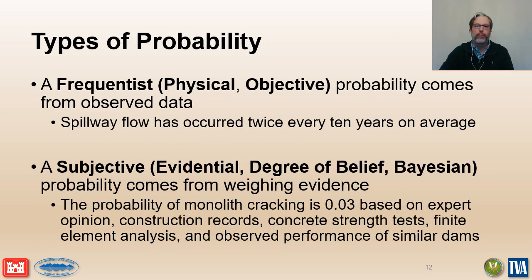There are two interpretations of probability that you will need to use in a risk analysis. An objective probability is calculated directly from data, which can be observed in the real world or simulated in an experiment or in a model. A subjective probability is estimated by a rational weighting of the available evidence based on your personal experience and judgment. Subjective probabilities reflect your willingness to take a particular action or not, based on your degree of belief in the evidence.